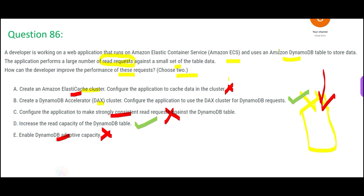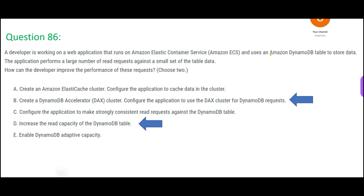That leaves option D — increase the read capacity. There are read capacity units in DynamoDB, and each table, for example, has 40,000 read capacity units. You can increase that to 80,000 or more, which helps handle the load. Together with DAX — in-memory caching — plus increasing the read capacity units, you can solve this problem. You can use these two solutions together or one at a time, whichever helps.